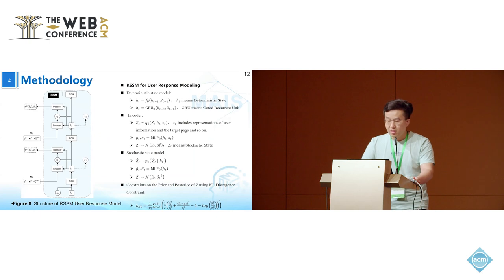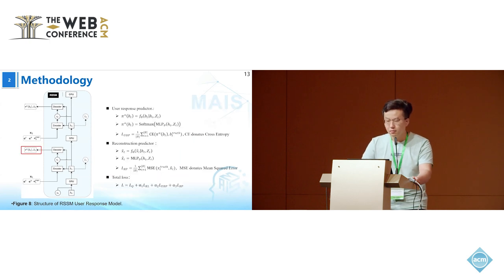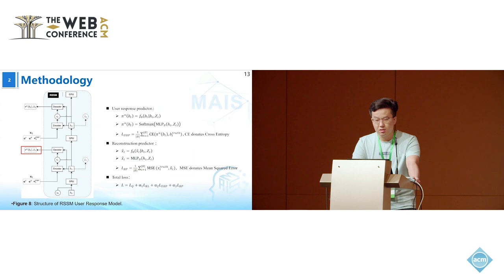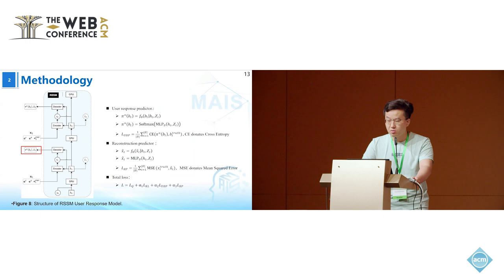Here are some specific formulas displayed. The deterministic state module uses a GRU. Z introduces randomness through normal sampling. The true Z and imagined Z are constrained using KL divergence to bring the imagined Z closer to the true Z. The user's response prediction provides the probability distribution of user responses. The reconstruction of key information further amplifies the predictive accuracy of our model.